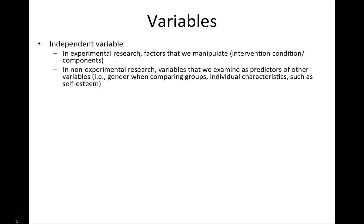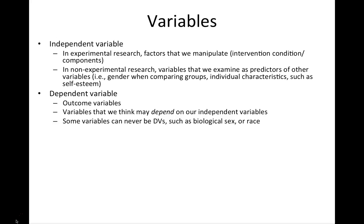Let's do a quick review of variables. I think your book does a pretty nice job of covering the definitions, but this is something students often struggle to keep straight. Independent variables in experimental research are easy to remember — they are the factors that we manipulate, so maybe it's an intervention condition versus a control condition. In non-experimental research, these are variables that we examine as predictors of other variables. For example, if we're examining gender differences, gender would be our independent variable because we think some other variable depends on gender. It could be individual characteristics like self-esteem, if we think self-esteem predicts some other outcome.